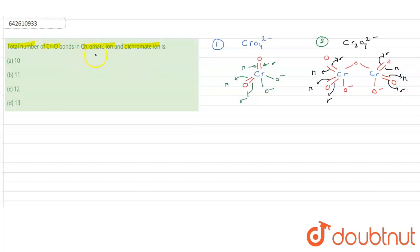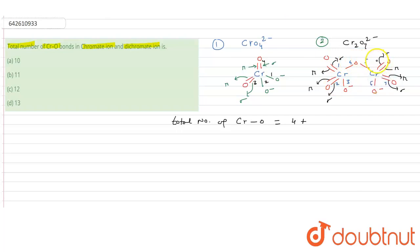The question asks for the total number of Cr-O bonds in both ions. In the chromate ion (CrO4²⁻), there are four Cr-O bonds. In the dichromate ion (Cr2O7²⁻), counting all Cr-O bonds gives eight. So the total number of Cr-O bonds in both ions combined is 4 + 8 = 12. Checking the options, the correct answer is option (C): 12.